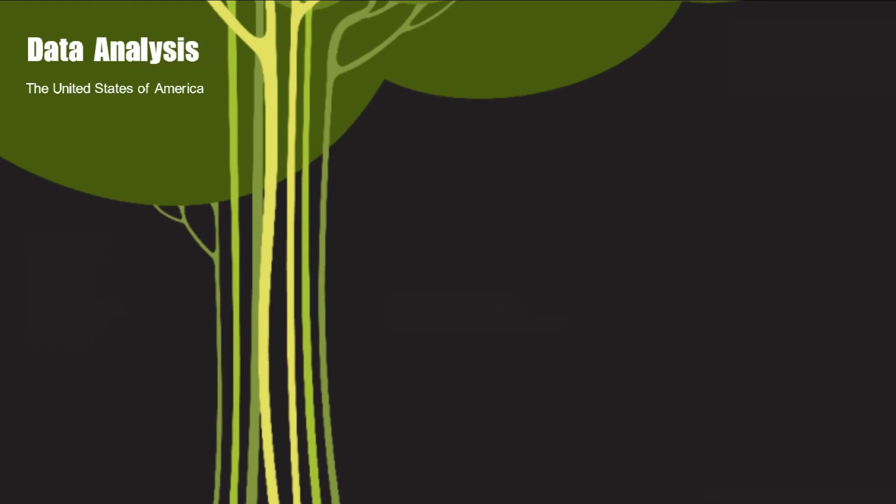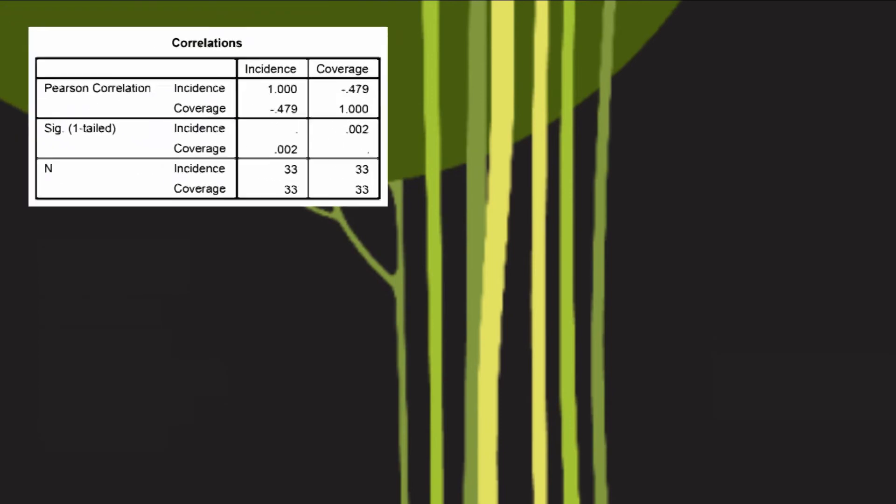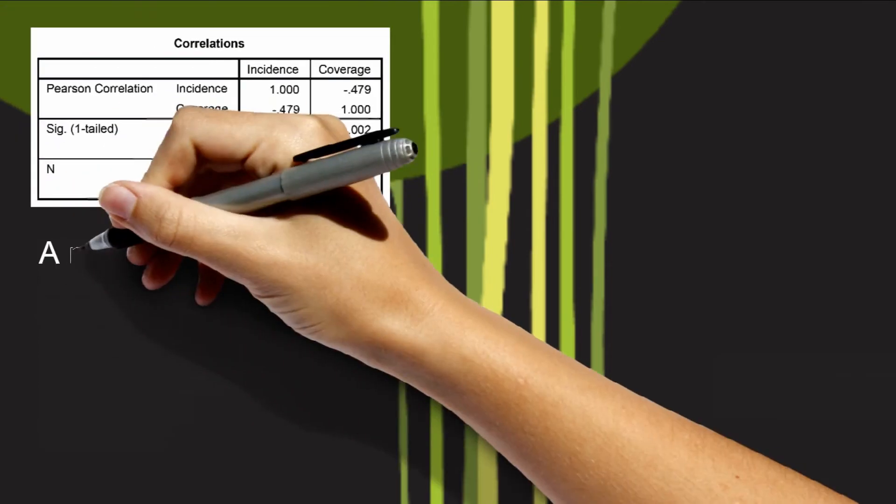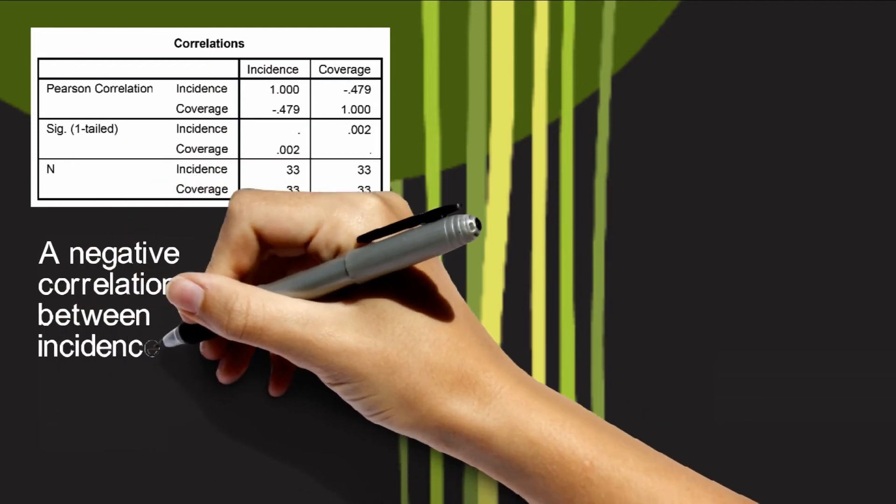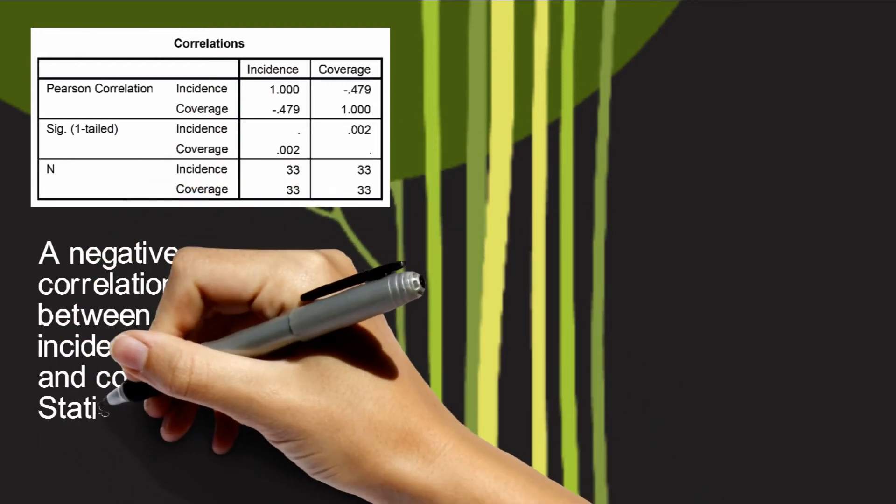After conducting a simple correlation analysis of the United States, we can see that there is a negative correlation between incidence and coverage. The correlation is not extremely strong, but it shows to be statistically significant.